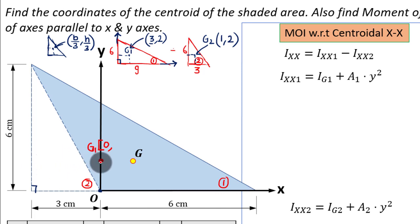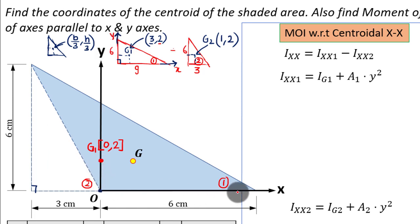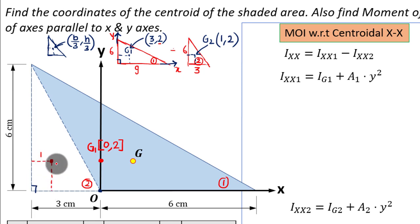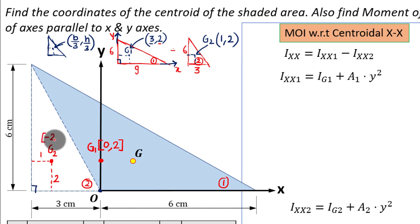The assessment of this coordinate has been made with respect to the local x and y, but the actual x and y axes are slightly different based on the problem. For g2 at coordinates one comma two in local terms: this distance is one and this distance is two. From the actual axis, that's three minus one equals two, but it is on the negative side, so x2 is minus two. The y coordinate remains two.